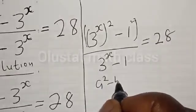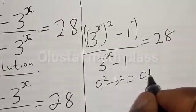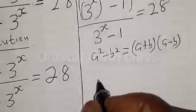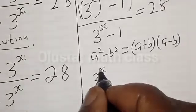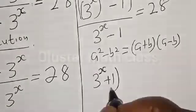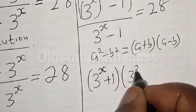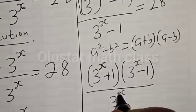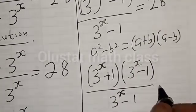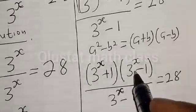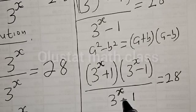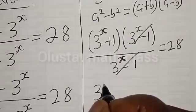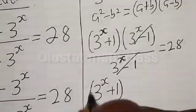And if you have a squared minus b squared, that equals a plus b multiplied by a minus b. Then the numerator becomes 3 raised to the power s plus 1, multiplied by 3 raised to the power s minus 1, divided by 3 raised to the power s minus 1. We have 3 raised to the power s minus 1 in both numerator and denominator, so they cancel. We are left with 3 raised to the power s plus 1.